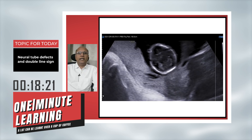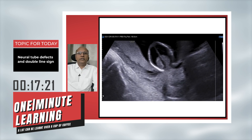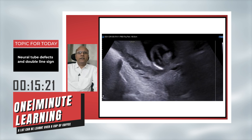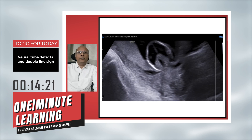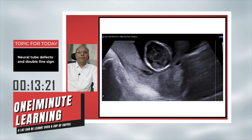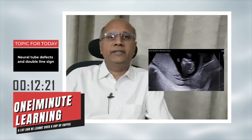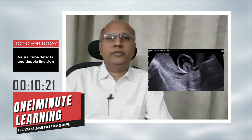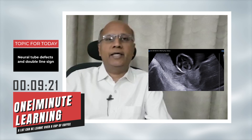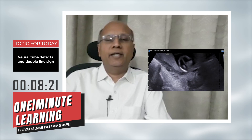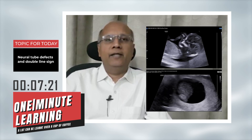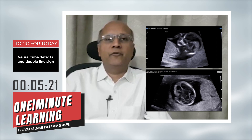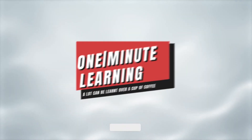This is an axial scan showing loss of the two-line sign and a single line, and this is a strong marker for open neural tube defect.